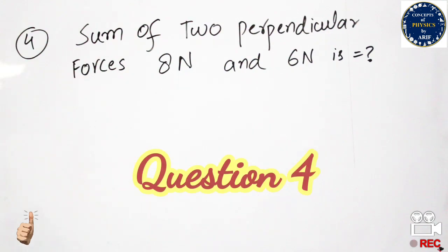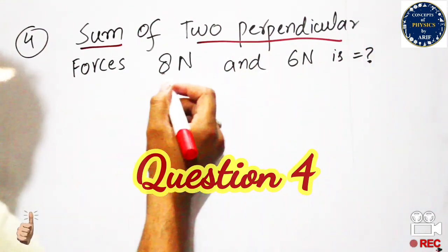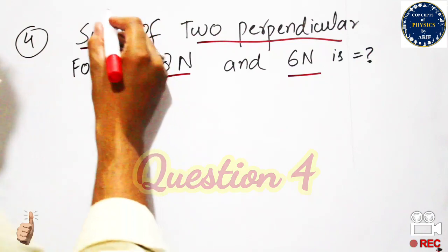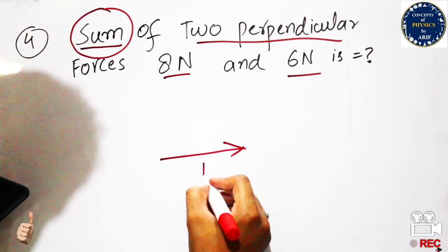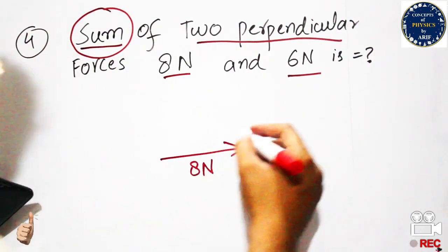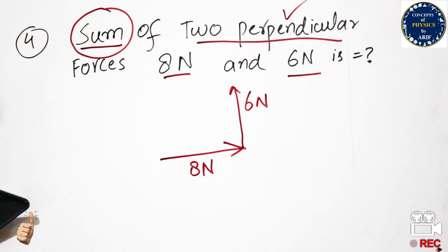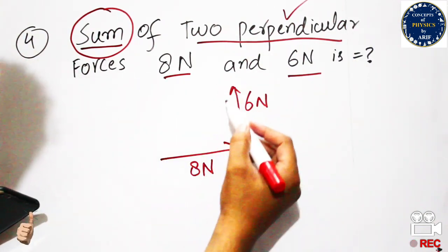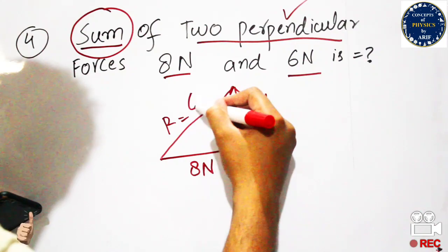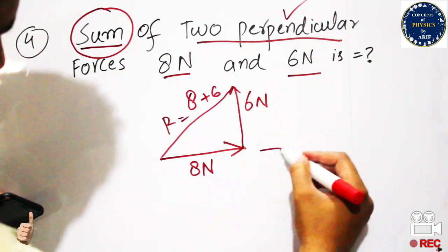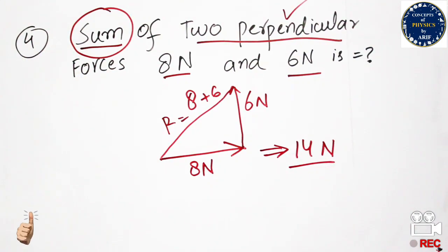The next question asks for the sum of two perpendicular forces: 8 N and 6 N. Force is a vector quantity. For example, 8 N is in the horizontal direction and 6 N is in the vertical direction. According to the rules of vectors, we find the resultant. The final answer is 14 N.